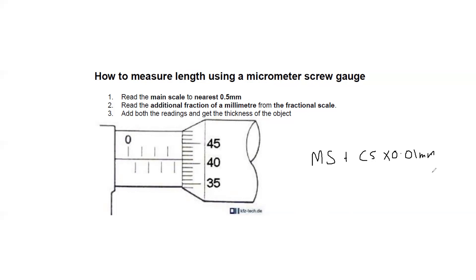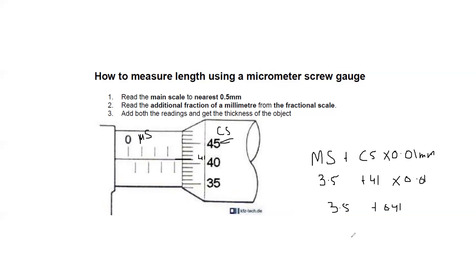That formula gives us the micrometer value. We read the main scale — the smallest value on the main scale is 0.5 mm, so readings go 0.5, 1, 1.5, 2, 2.5, 3, 3.5. The circular scale reading is the line which coincides with the main scale — here it is 41. So the result is 3.5 plus 41 multiplied by 0.01, which equals 3.5 plus 0.41, giving 3.91 millimeters.